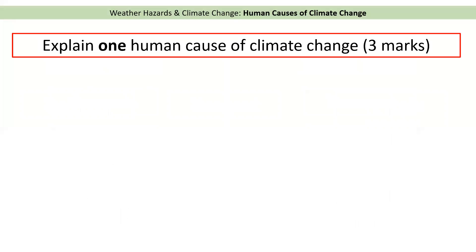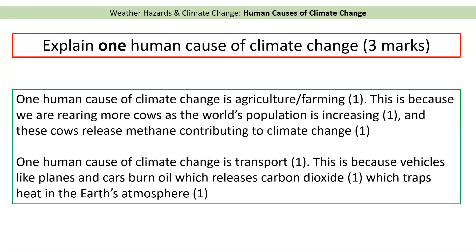On to a three-mark exam question: explain one human cause of climate change. It's three marks, so it should be PED — point, explain, develop. Here are the model answers. One human cause of climate change is farming or agriculture. This is because we are rearing more cows as the world's population is increasing, and these cows release methane, which contributes to climate change. Alternatively: one human cause of climate change is transport. This is because vehicles like planes and cars burn oil, which releases carbon dioxide, and that traps heat in the Earth's atmosphere. For these questions, you must develop your answer to get that third and final mark. If you have any more questions, please speak to your geography teacher.